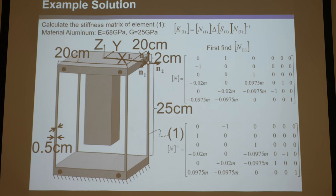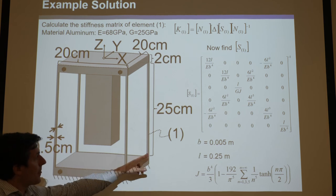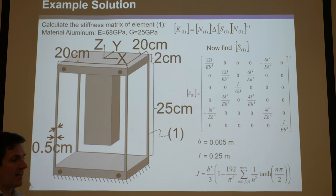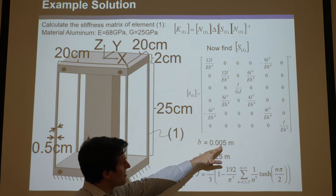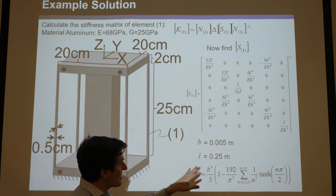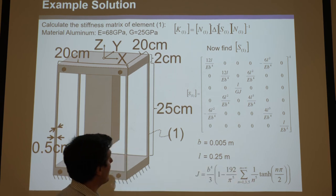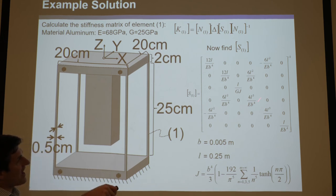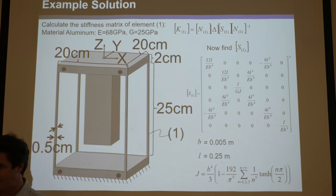Now let's find the stiffness matrix of element one. Go back to the compliance matrix slide and plug in all the values. B and H are equal at 0.005 meters (0.5 cm). Anywhere there was an H, plug in B. L is 0.25 meters. Convert everything to meters. Note there's a negative one exponent — this is inverted compliance to give stiffness. That gives S1.